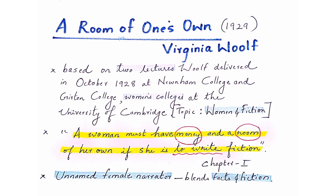A Room of One's Own by Virginia Woolf is an essay published in 1929. In the previous year, 1928, Virginia Woolf was called to two women's colleges — Newnham College and Girton College — where she was asked to deliver lectures based on the topic of women and fiction. She gave two lectures and these lectures were later transformed into essay form and titled A Room of One's Own.